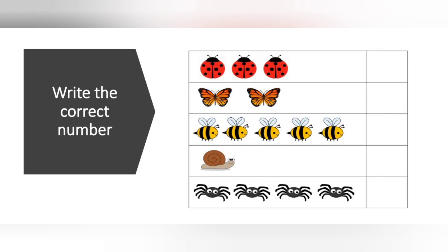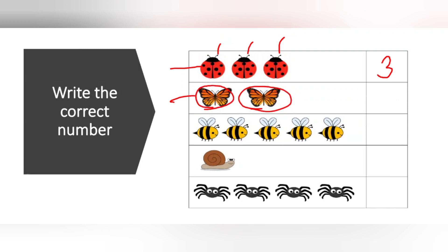Write the correct number. We already learned from 0 to 5, right? So we will count and write the correct number in each row. In the first row, how many bees are there? 1, 2, 3 — how many? Number 3. You have to count with me. Second one, butterflies: 1, 2. How many are there? 2.